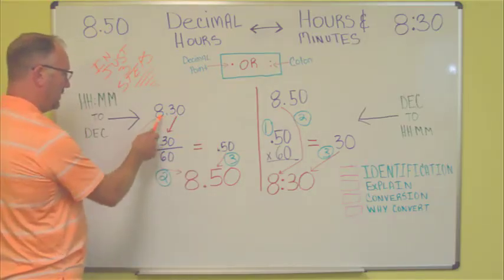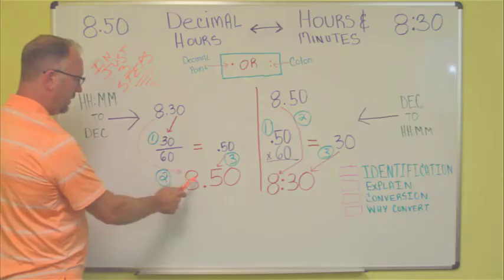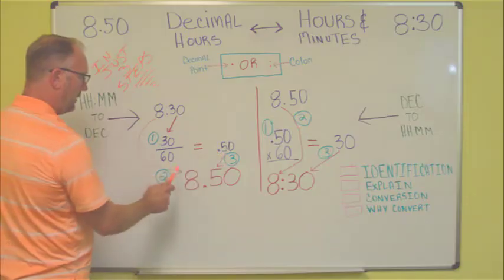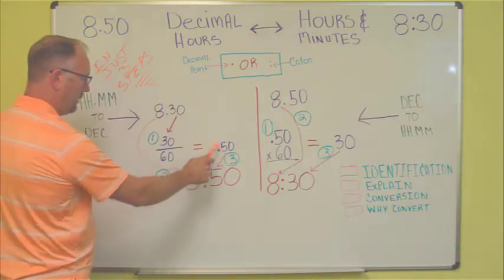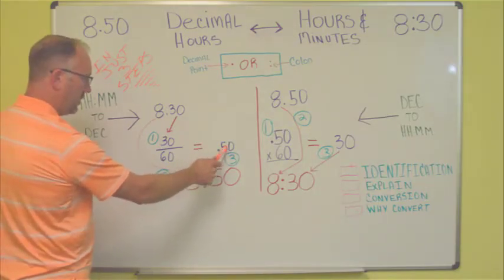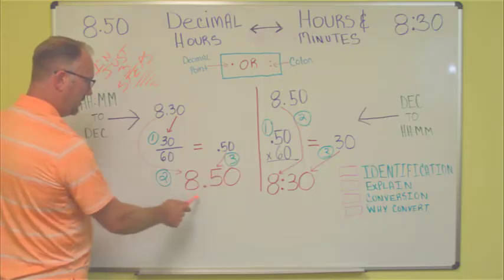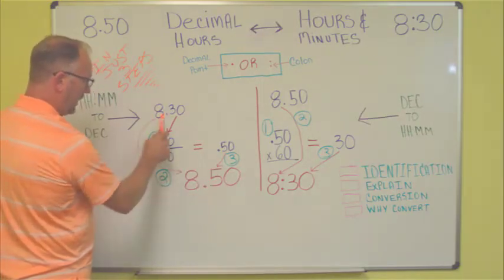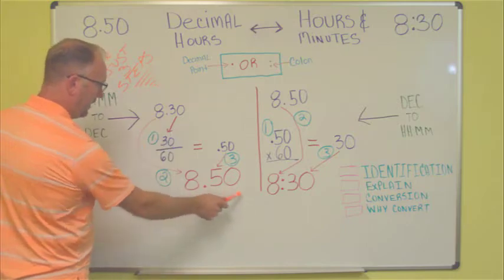The second step is to move the integer part down, the 8, the hours part down. The third step is to take our previously calculated fraction, or the decimal portion, move that down, the .50. So, we'll end up with 8.50. 8 hours and 30 minutes is 8.50 hours.